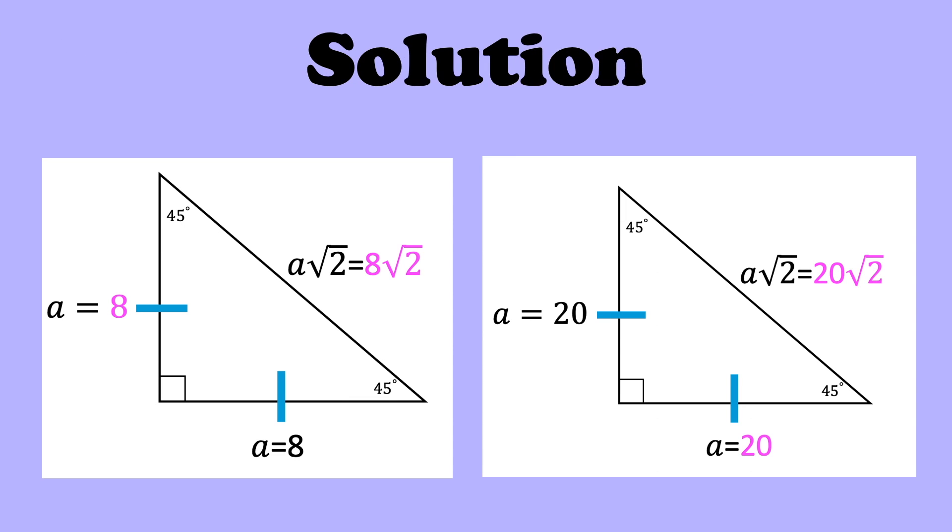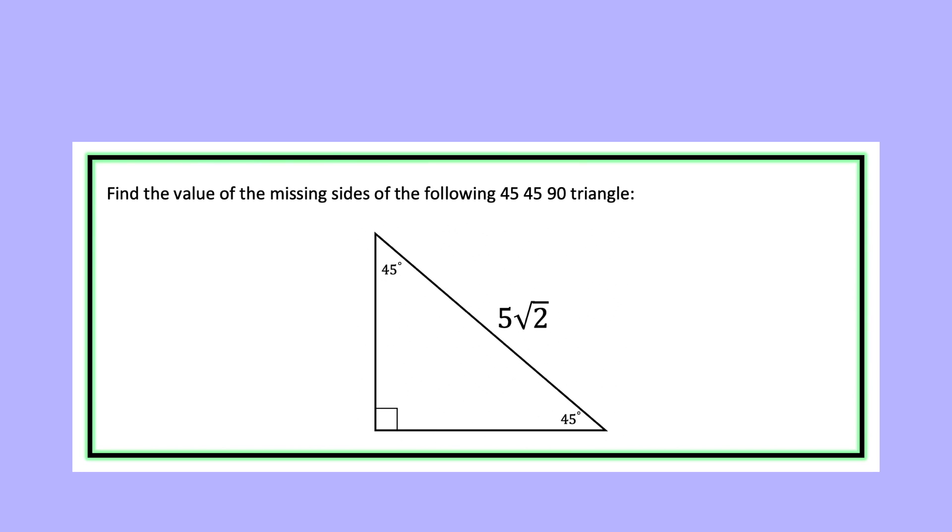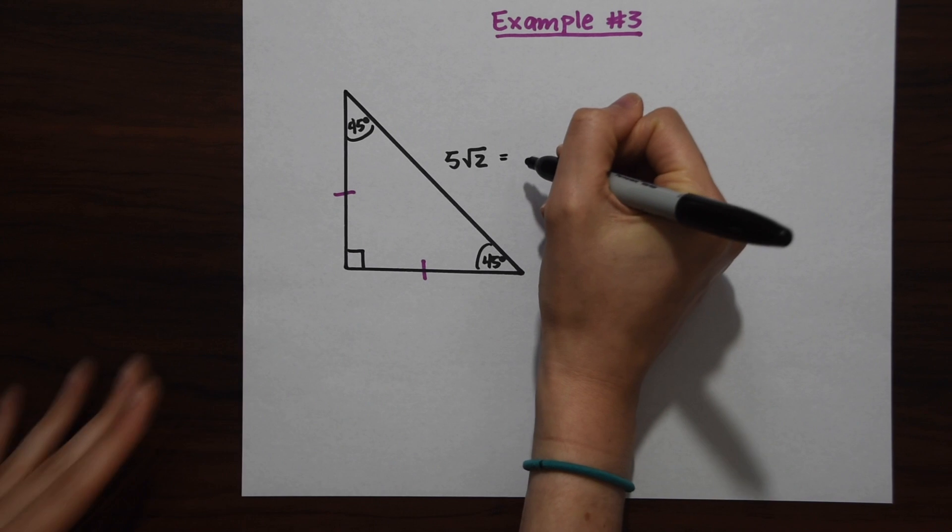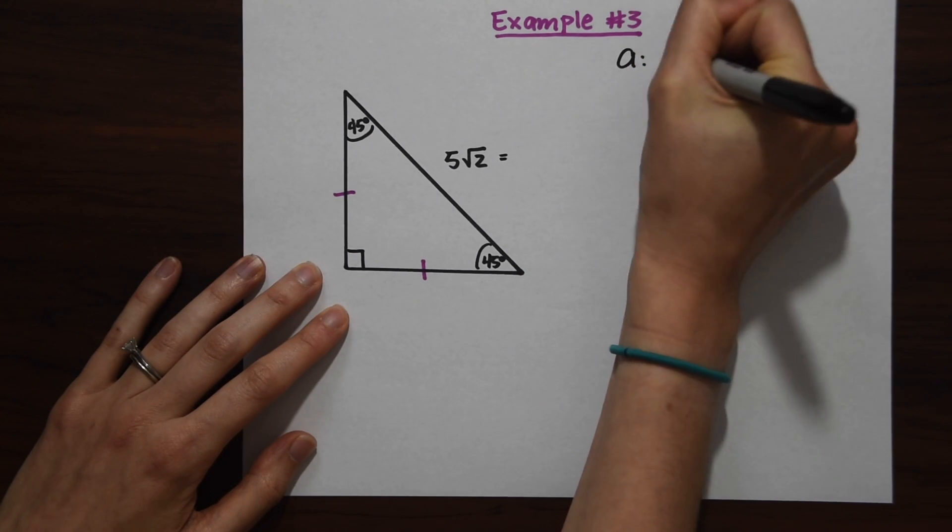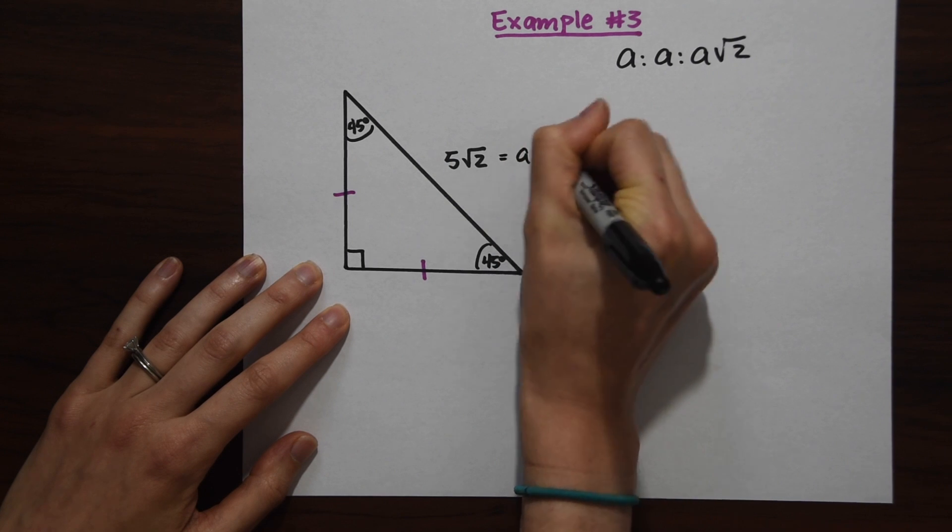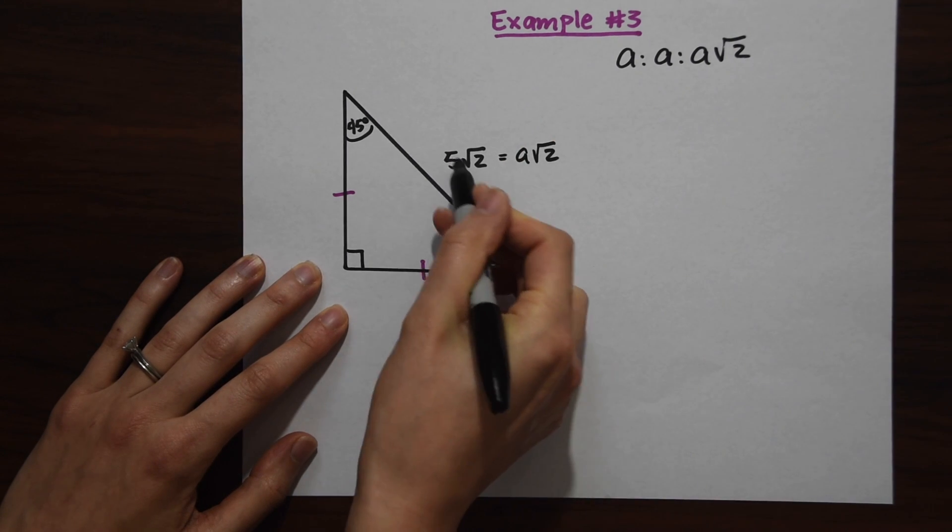Now we're going to look at a question that gives us the hypotenuse and we need to find the values of its legs. This is a little different. We have 5 radical 2. Remember this is equal to our ratio a to a to a radical 2, so this is equal to a radical 2. If we know the value of a, we can see that right away—a is just equal to 5 here.